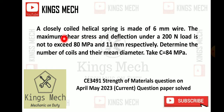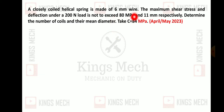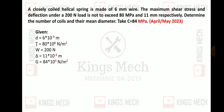The question: a closely coiled helical spring is made up of 6mm wire. The maximum shear stress and deflection under a 200 newton load must not exceed 80 mega pascal and 11mm respectively. Determine the number of coils n and mean diameter D. Take G equal to 84 giga pascal.